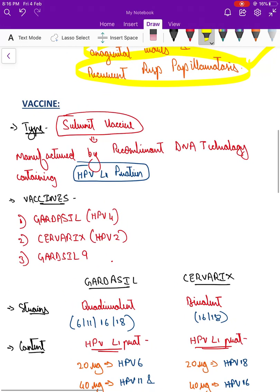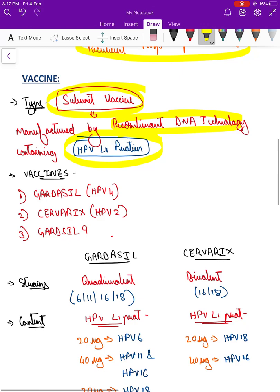Now coming to the vaccine, what are the types of vaccine available? It is a subunit vaccine, manufactured by recombinant DNA technology, containing HPV L1 protein. So it contains the outer capsid protein, goes by the name HPV L1 protein.